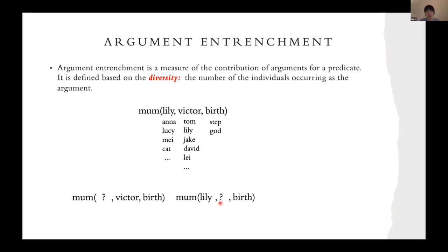If you lost the second argument, then you know Lily has given birth to someone, but you don't know who this person is. However, if you lost the third one, you will know that at least Lily is Victor's mom, but maybe it can be the birth mom or step mom, but there are limited choices.